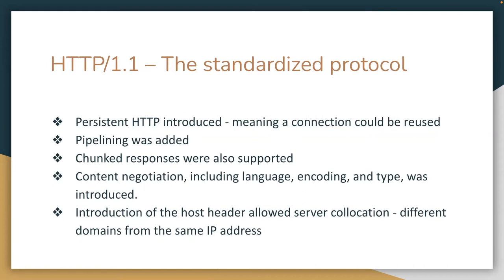Fast forward again, and now we finally have a standardized protocol with HTTP 1.1. Persistent HTTP is introduced, meaning the connection can be reused. Pipelining is added, which means you can send requests before receiving a response. We have chunk responses using HTTP range to get a particular piece of an object on the server. We have content negotiation, where the server and client agree on language, encoding, and type. And finally, we have host headers, which allow for server co-location — a single IP address with multiple domains.